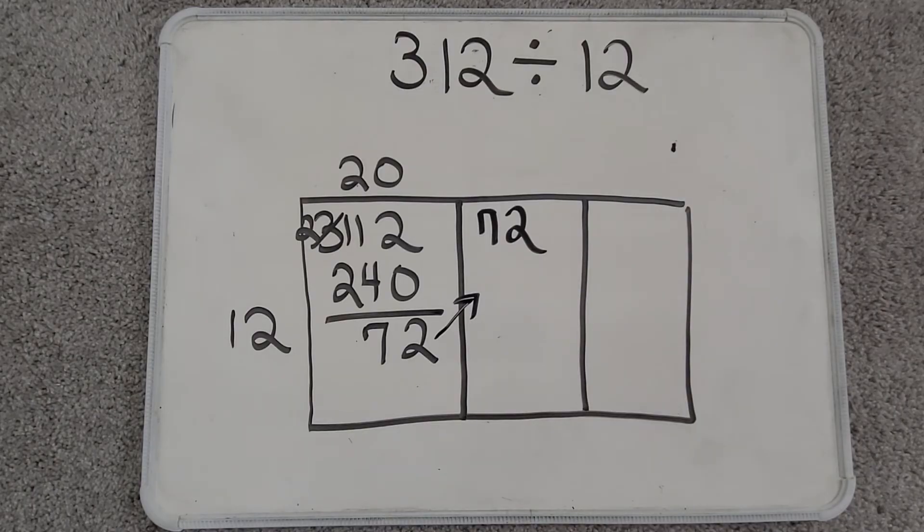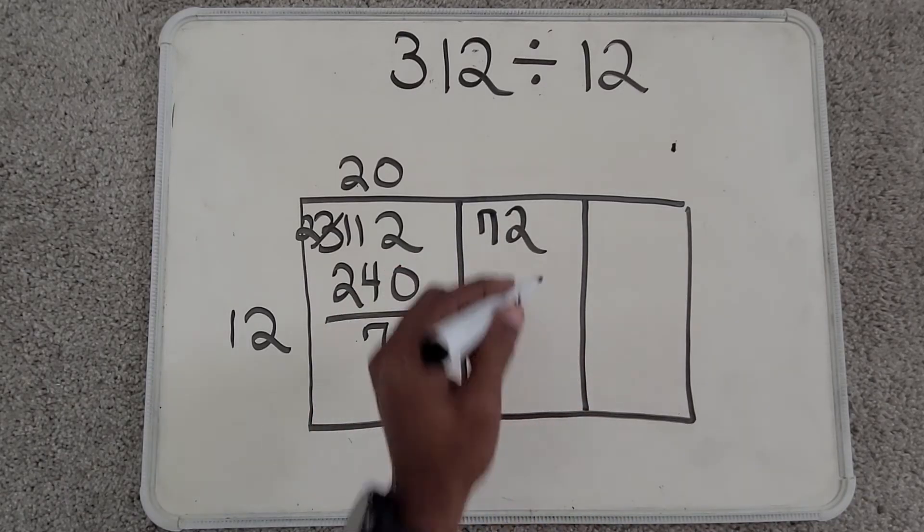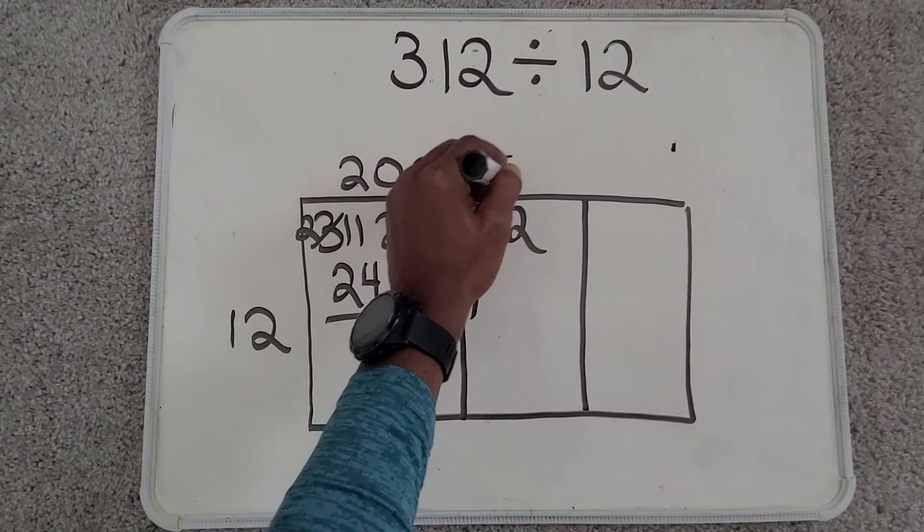Now I have to decide on another number that I can multiply by 12 and subtract away from 72. I am going to choose something easy that I know, 5.